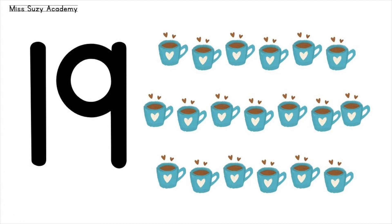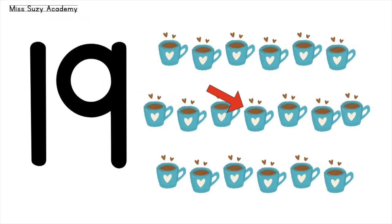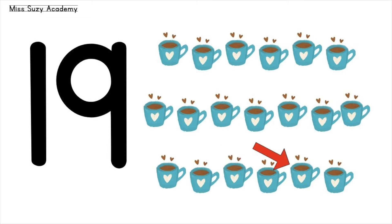19 cops: 1, 2, 3, 4, 5, 6, 7, 8, 9, 10, 11, 12, 13, 14, 15, 16, 17, 18, 19. 19 cops!